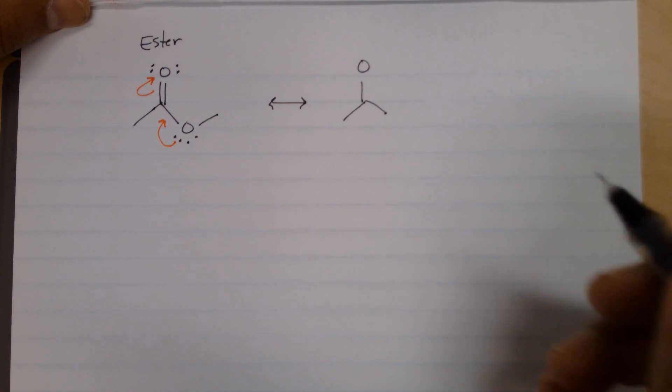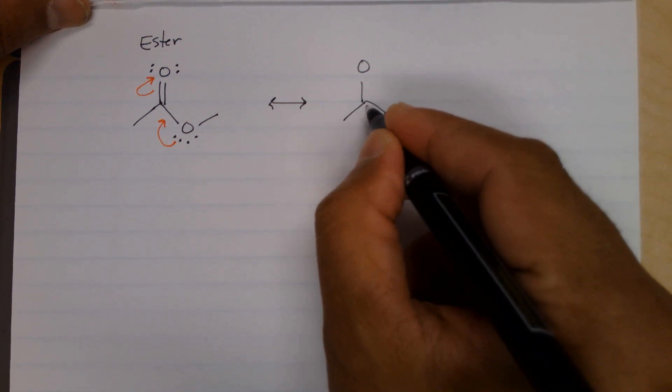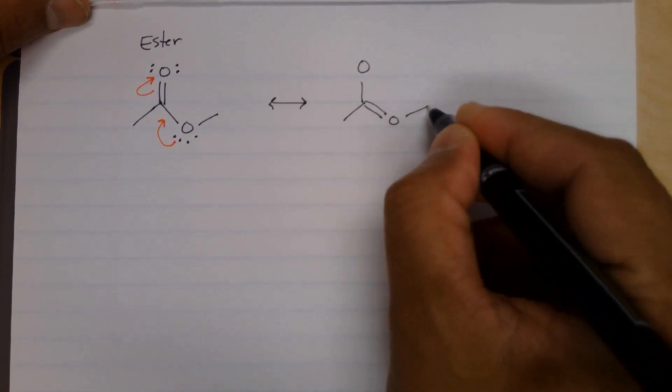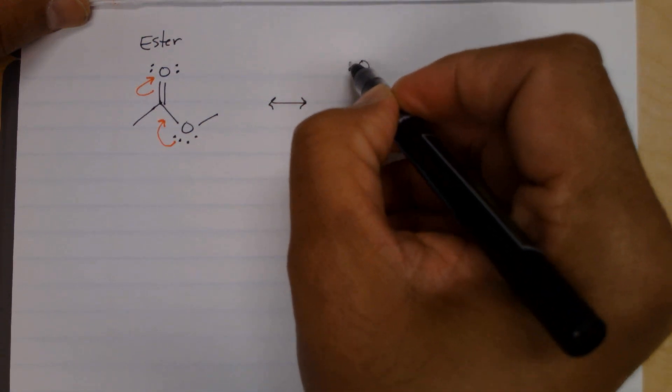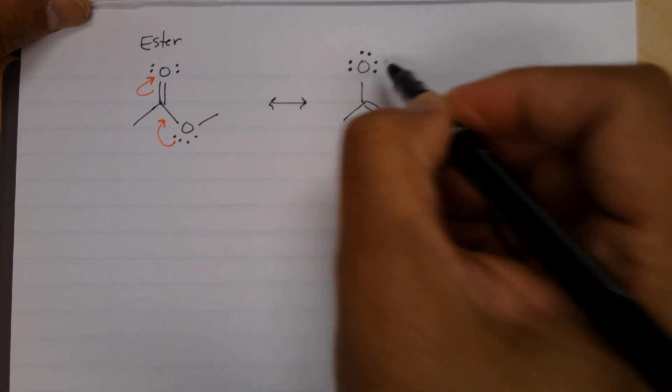So this becomes a single bond. There's a double bond here with one lone pair. On this oxygen, we have three lone pairs now.